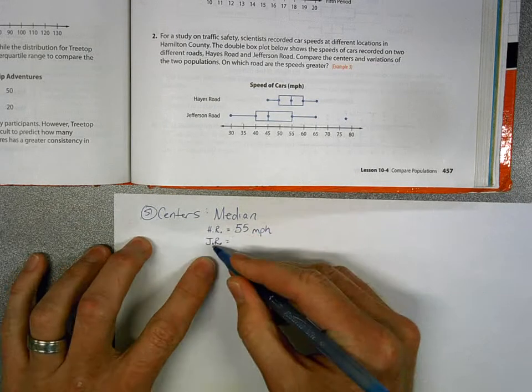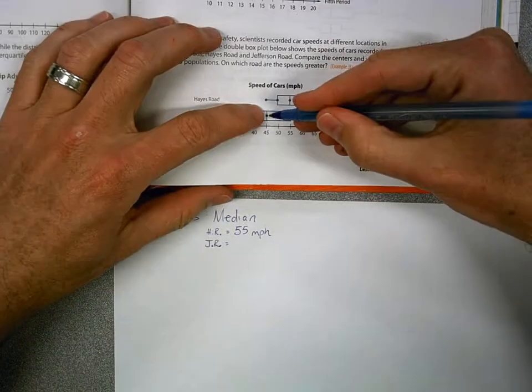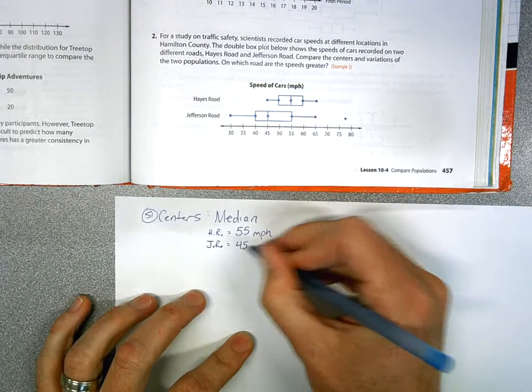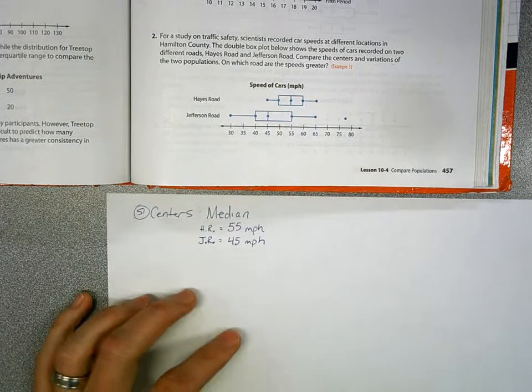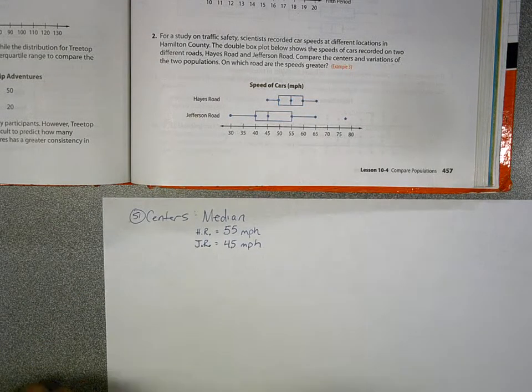And then on Jefferson Road, it's right here. The median is 45 miles per hour.